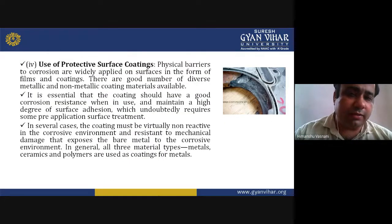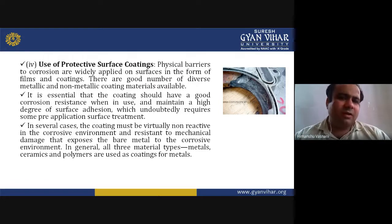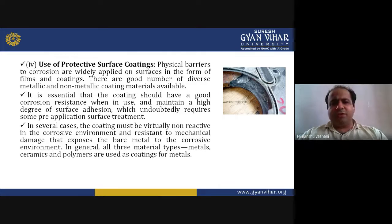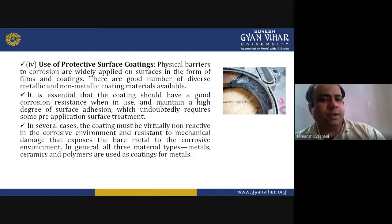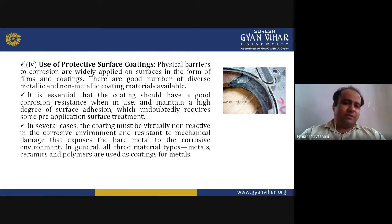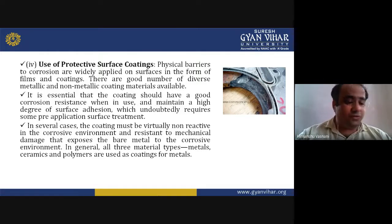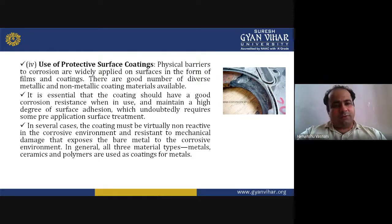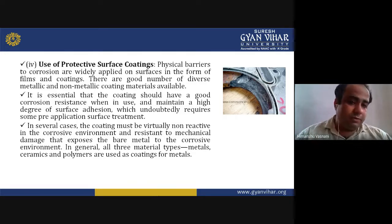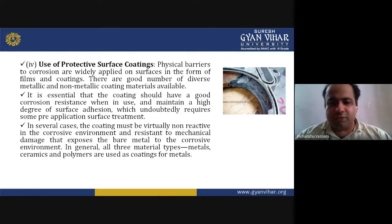Physical barriers of corrosion are widely applied on surfaces in the form of films and coatings. There are diverse metallic and non-metallic coating materials available. The coating must have good corrosion resistance, a high degree of surface adhesion — which requires pre-application surface treatment — and must be resistant to mechanical damage that exposes the bare metal. Metals, ceramics, and polymers are used as coatings for metals.